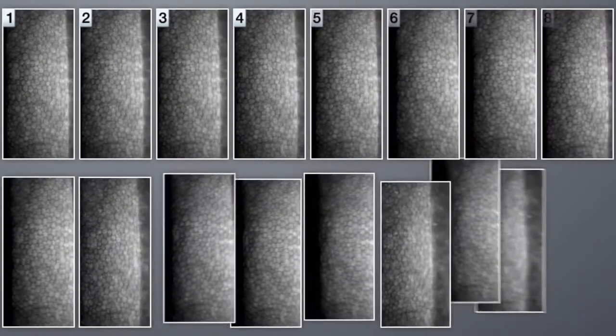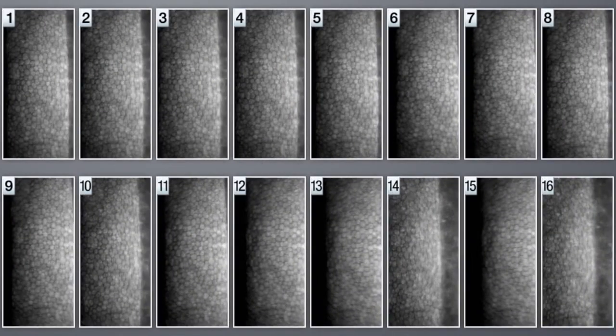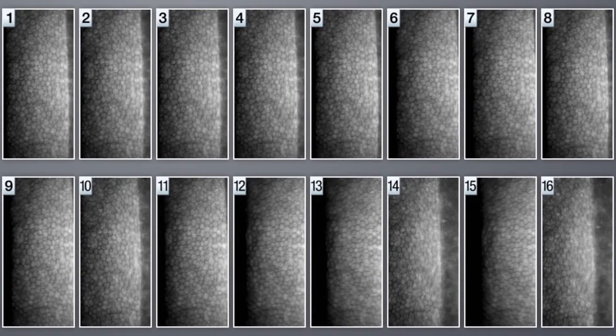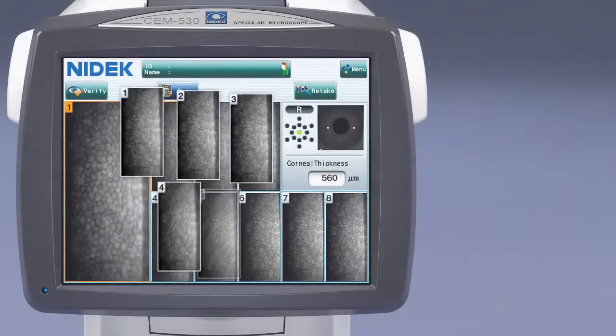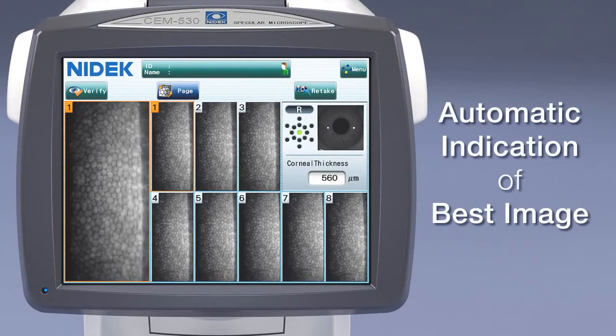Within each imaged area, many images are captured. Then, 16 images are automatically selected and sorted based on their individual quality and ability to be analyzed. These images are presented 8 at a time on the touchscreen for easy selection of the desired image.